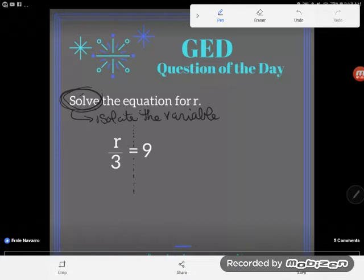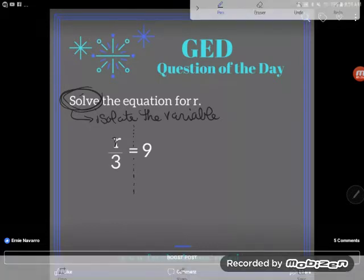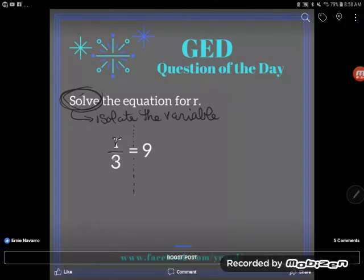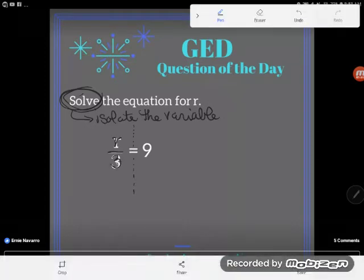And in algebra class, you get rid of something by doing the opposite of what you've been told. Instead of doing what the problem says, you're going to do the opposite. In order to know what the opposite is, you have to be able to read the problem. So let's take a look at this. This currently says R over 3. R over 3.